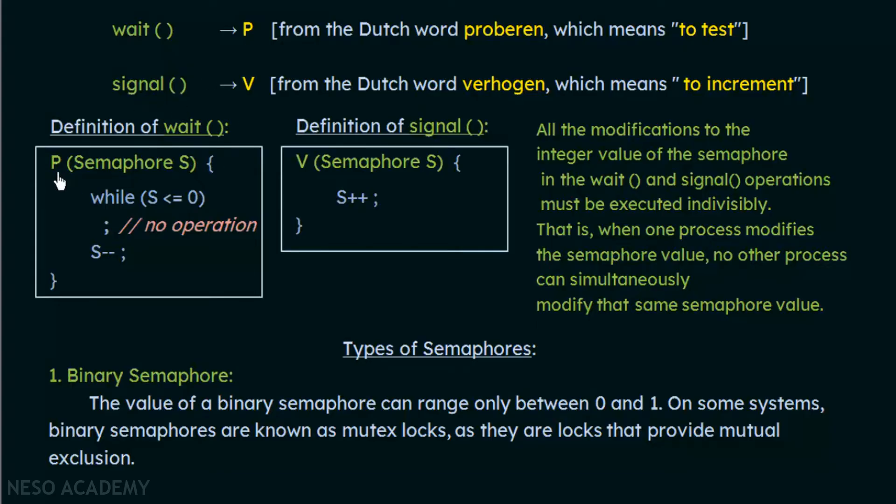Whenever there is a wait operation, in the definition of wait we see that there is going to be a decrement of the semaphore by 1. Whatever is the value of the semaphore, it will be decremented by 1 after the wait operation is performed. That means after P is executed, S will be decremented by 1. And the V operation, which is the signal operation, in this we see that the value of the semaphore is incremented by 1. Whenever the signal or V operation is performed, the semaphore's value will be incremented by 1. These are the two things that we need to keep in mind in order to solve that problem.